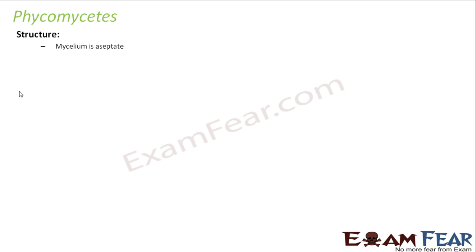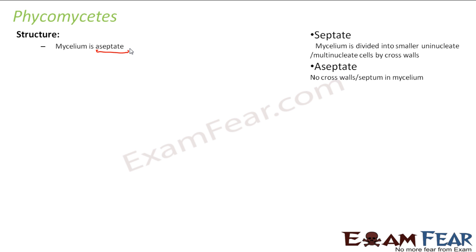Phycomycetes have a mycelium which is aseptate. Septum is the cross wall present inside the hyphae. Aseptate means no septum is present. Septate mycelium is divided into smaller uninucleate or multinucleate cells by cross walls. Aseptate means there is no cross wall present — the entire cytoplasm with all cell organelles is mixed up and flowing together with no separation.